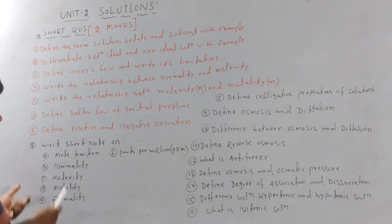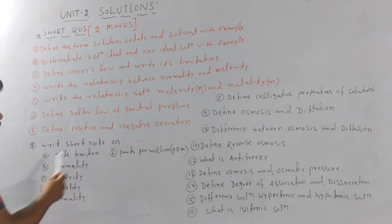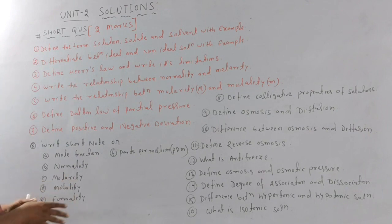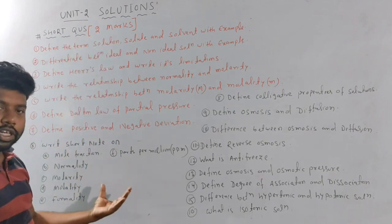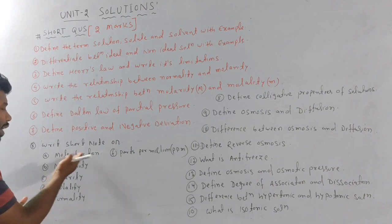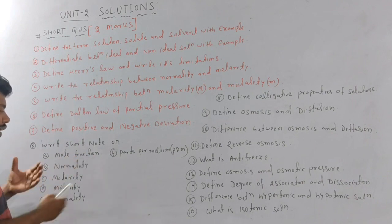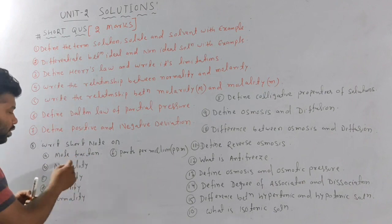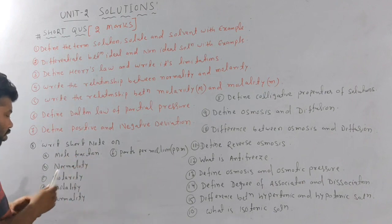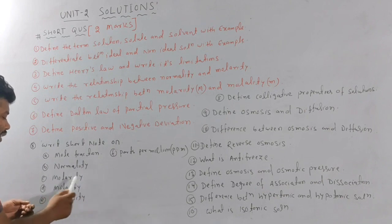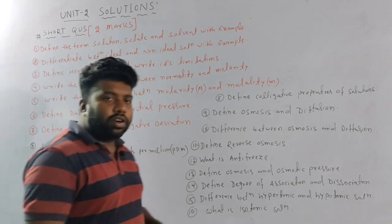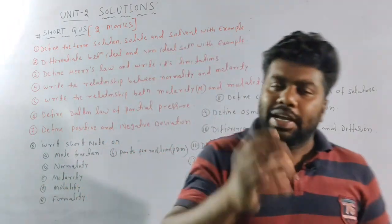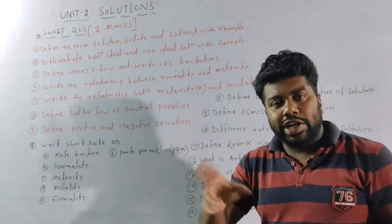Next question: write a short note. If you know the solution chapter, you can find the constraints and check the characteristics. The concentration expressions include: mole fraction, normality, molality, formality, PPM (parts per million). For short questions, define each — it's two marks each.